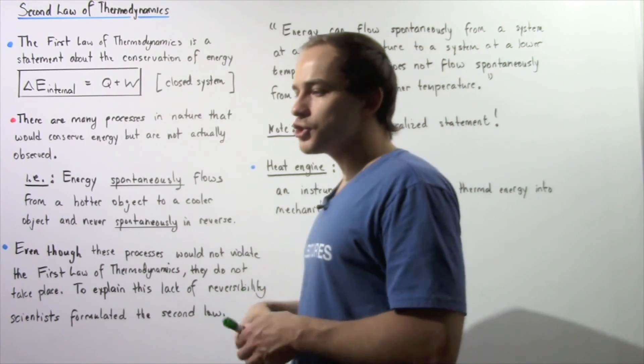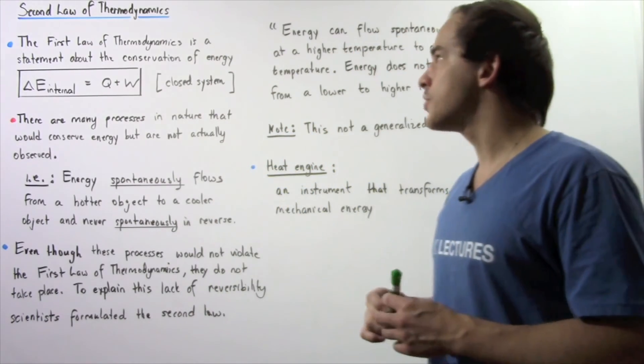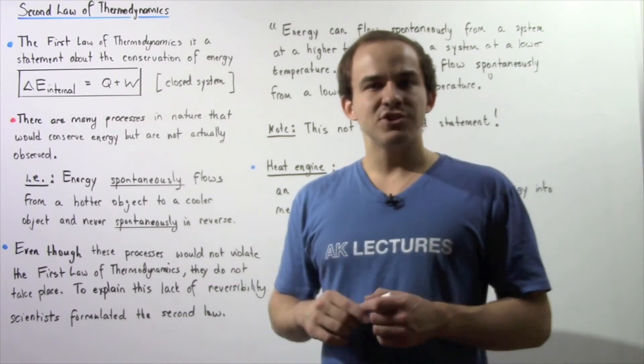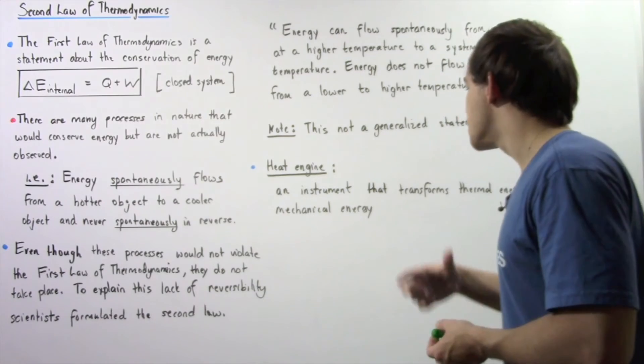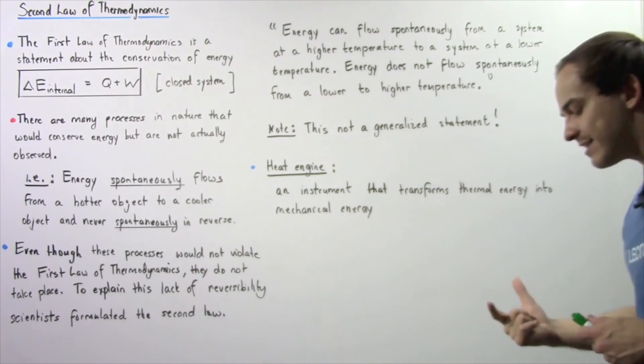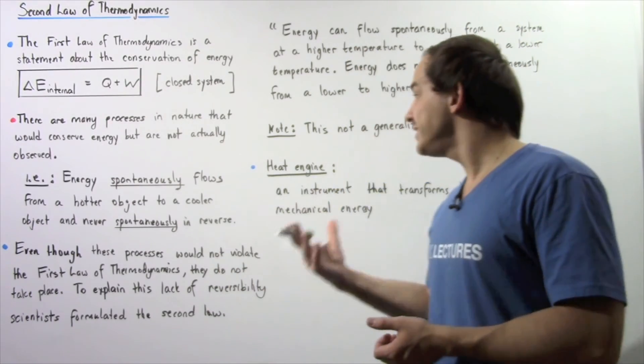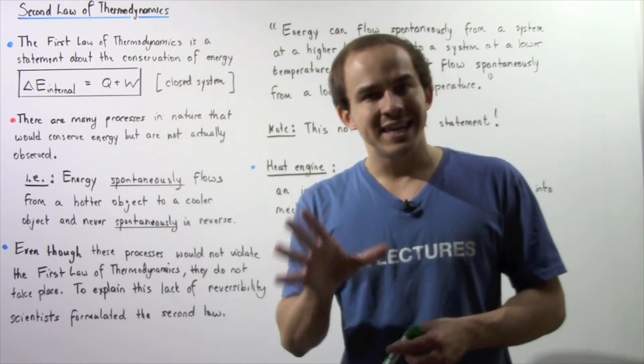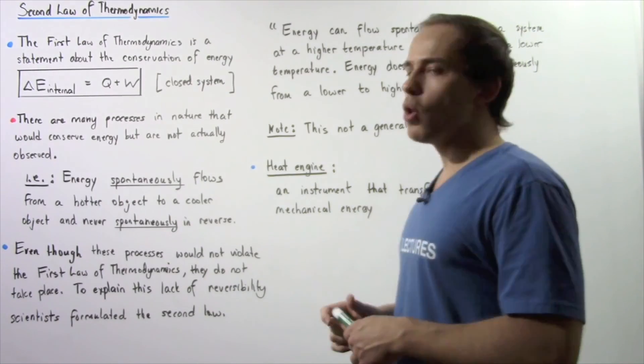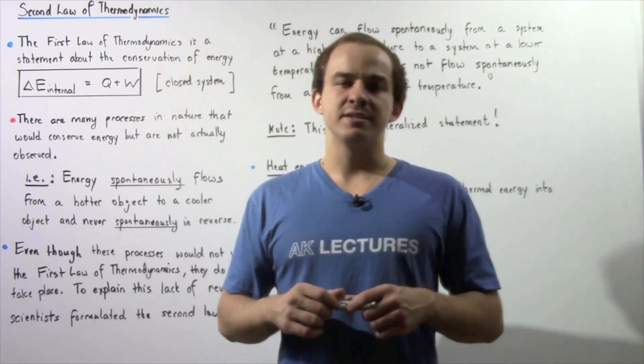In the next several lectures, we're going to formulate a generalized statement of the second law of thermodynamics using something known as a heat engine. A heat engine is essentially an instrument or a device that transforms thermal energy into mechanical energy. We're going to study what the heat engine is and use it to formulate a generalized version of the second law of thermodynamics, so that it applies to all different types of processes.